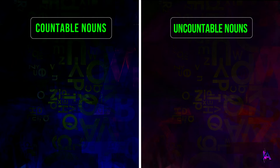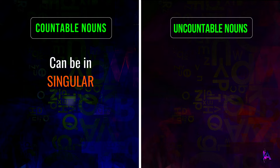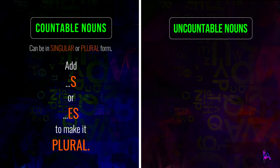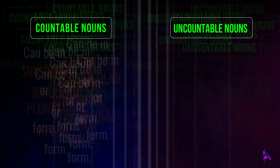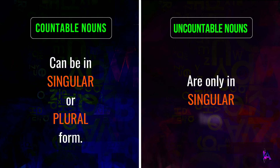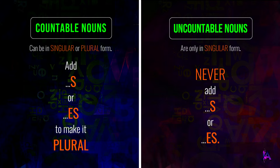Let's look at the differences between them. First, countable nouns can be in singular or plural form. We add s or es to make it plural. Whereas, uncountable nouns are only in singular form.